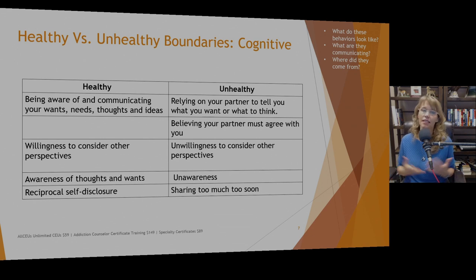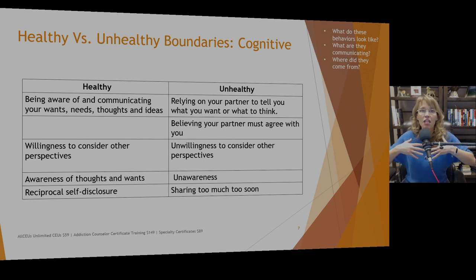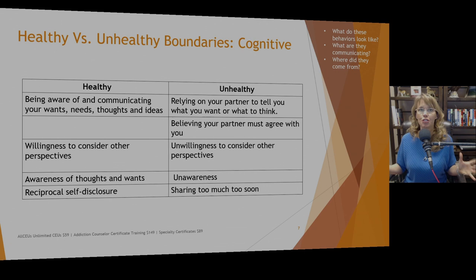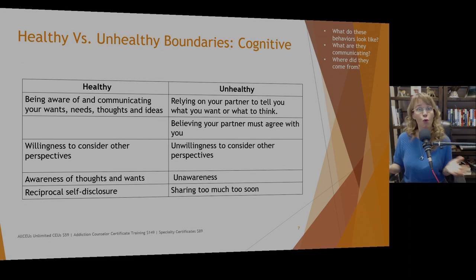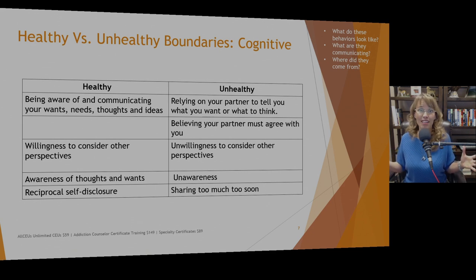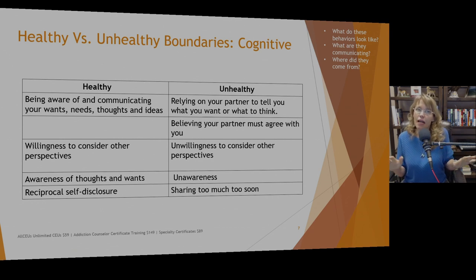Reciprocal self-disclosure is important and fits under cognitive relational boundaries. There's a difference between someone who meets you and immediately vomits their entire history onto you, versus gradually sharing more over time. In counseling it's a little different because clients come in expecting to share freely, but in relationships you've probably met someone who told you their deepest darkest secrets within 20 minutes of meeting — that's a boundary violation.